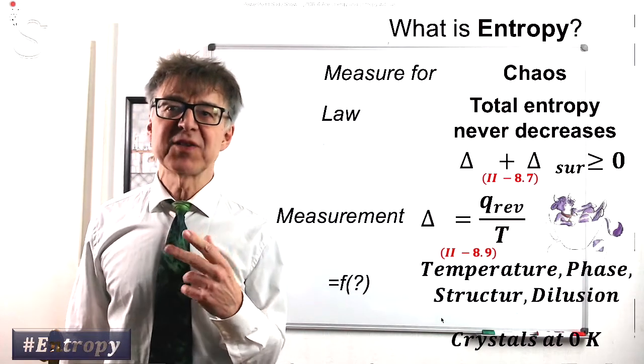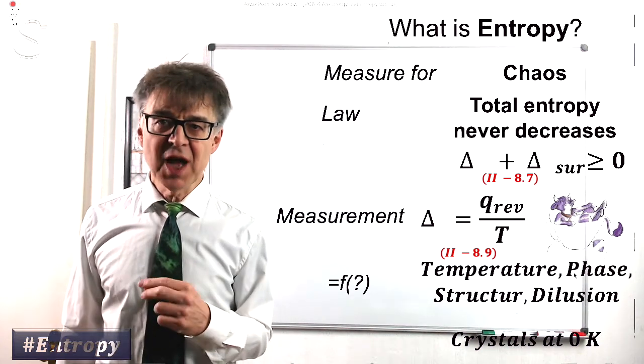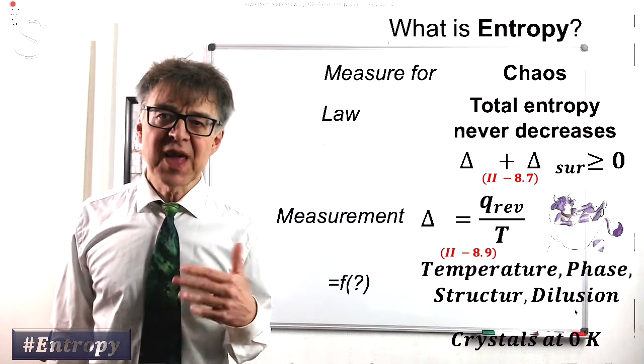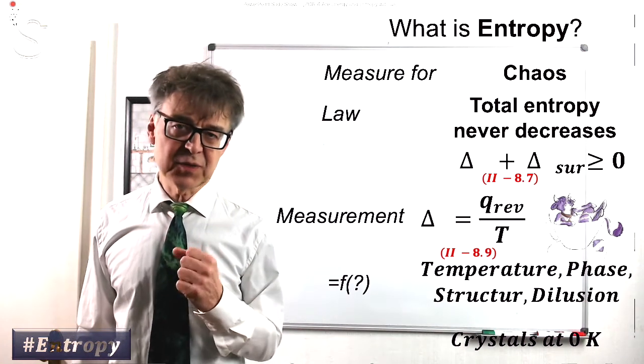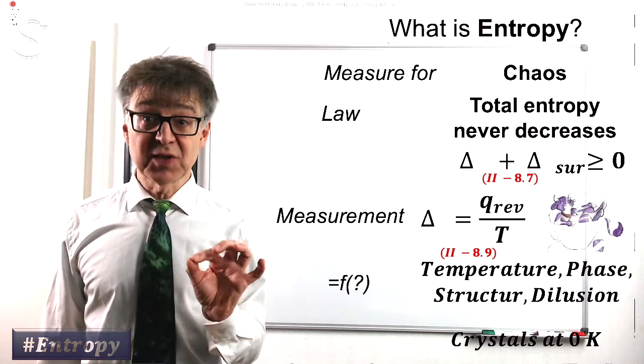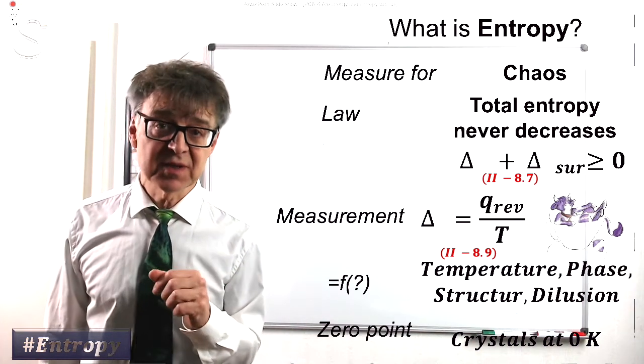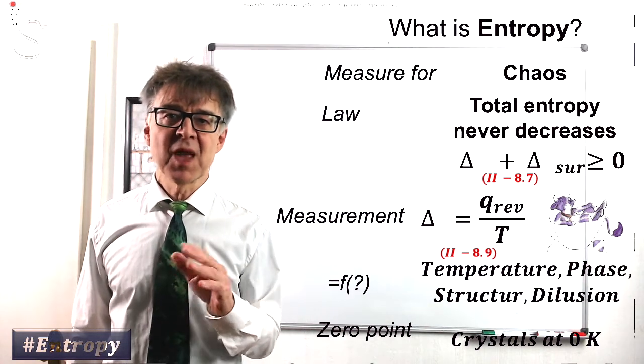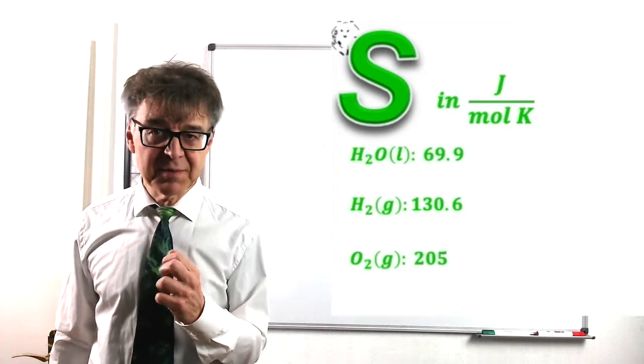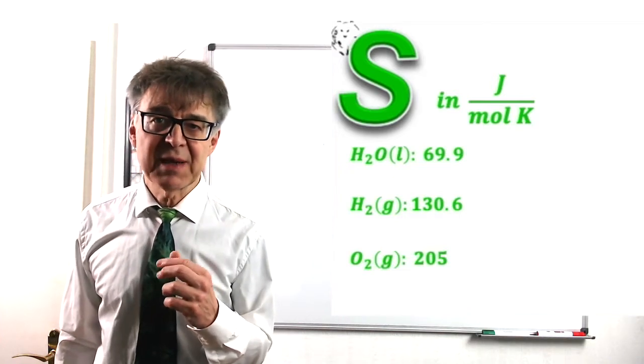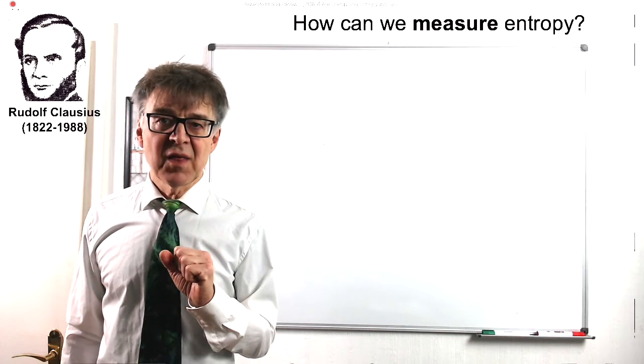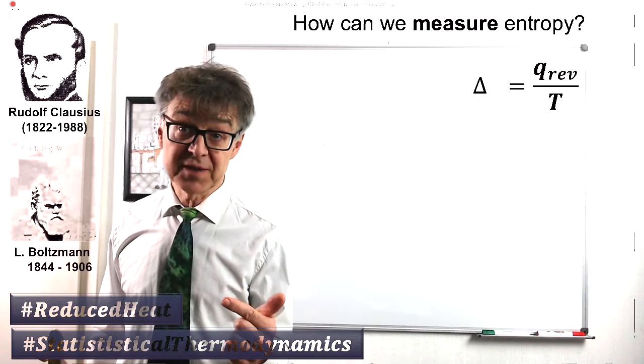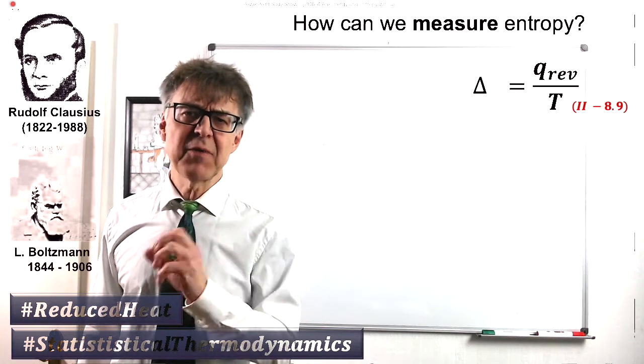Like enthalpy, entropy depends on temperature, phase and chemical structure, but also on dilution. Even in ideal systems, the entropy increases with dilution. The entropy has an absolute zero point, that is what the third law states, pure crystals at zero Kelvin. As a result, only positive entropy values can be found in thermodynamic tables in textbooks.